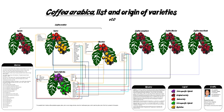Variety: this rank of taxa delineates differences between plants that are smaller than in subspecies but larger than forms. A variety retains most of the characteristics of the species, but differs in some way. Cultivar: any variety produced by horticultural or agricultural techniques and not normally found in natural populations — a cultivated variety.